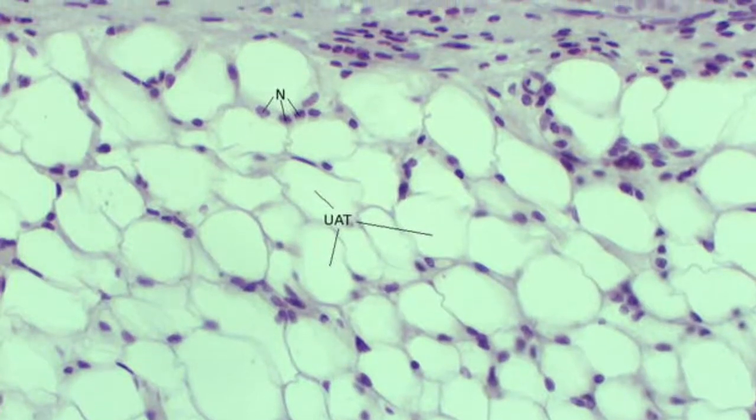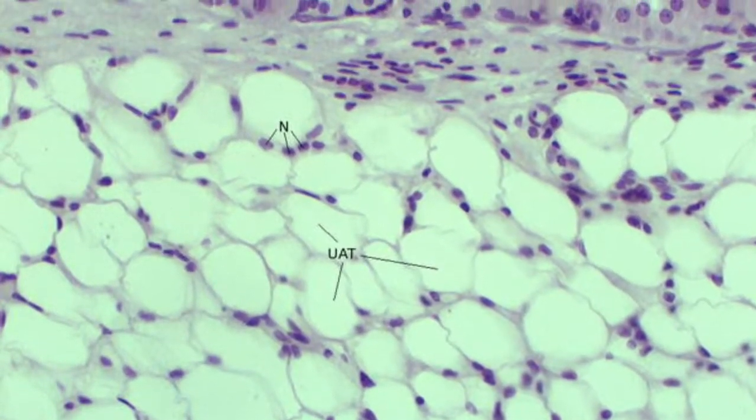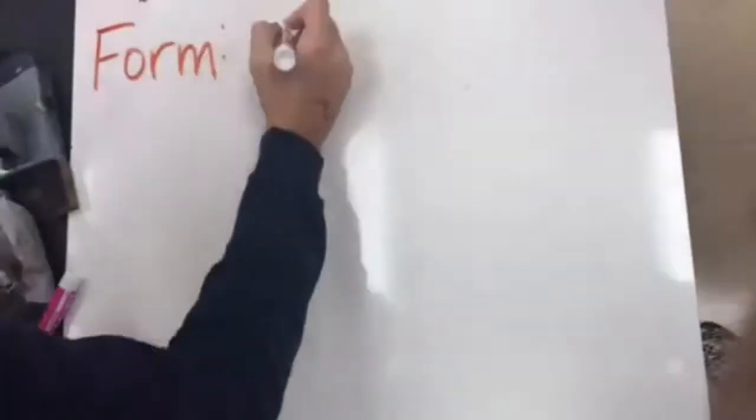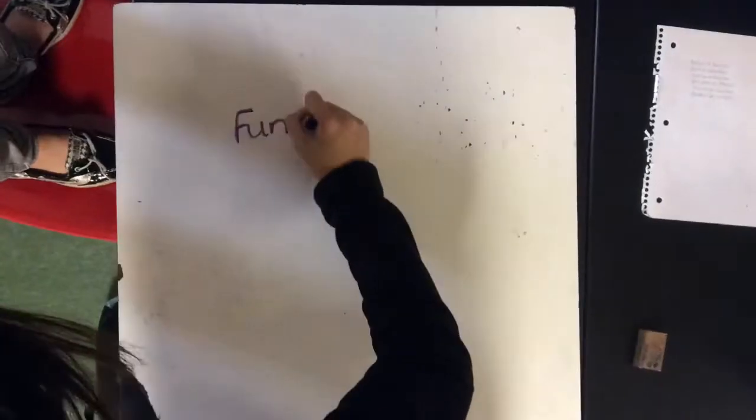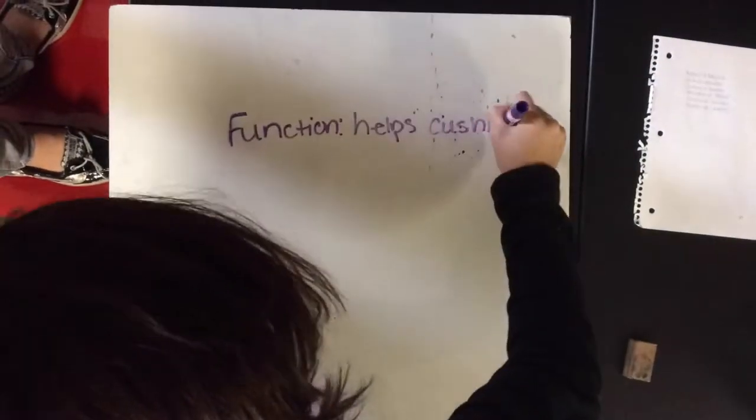Adipose connective. It contains large fat droplets that push the nucleus towards the membrane. Adipose is meant to cushion and protect the kidney.